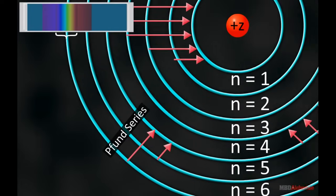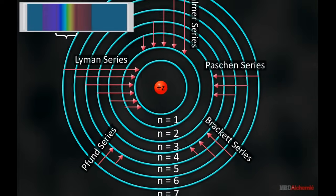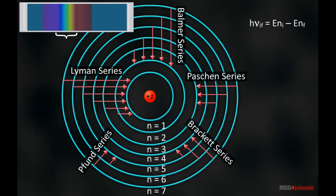The energy of emitted radiation is given by the formula shown here, and the Rydberg formula for the spectrum of hydrogen atom is also given by the formula as shown here.